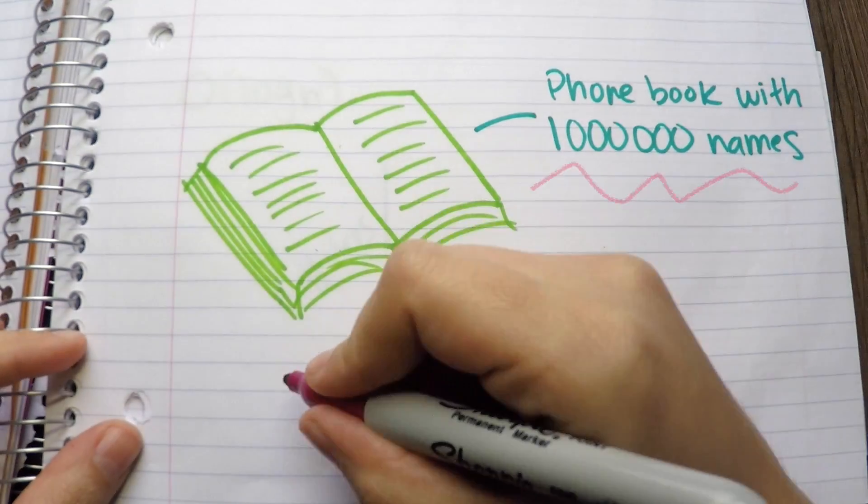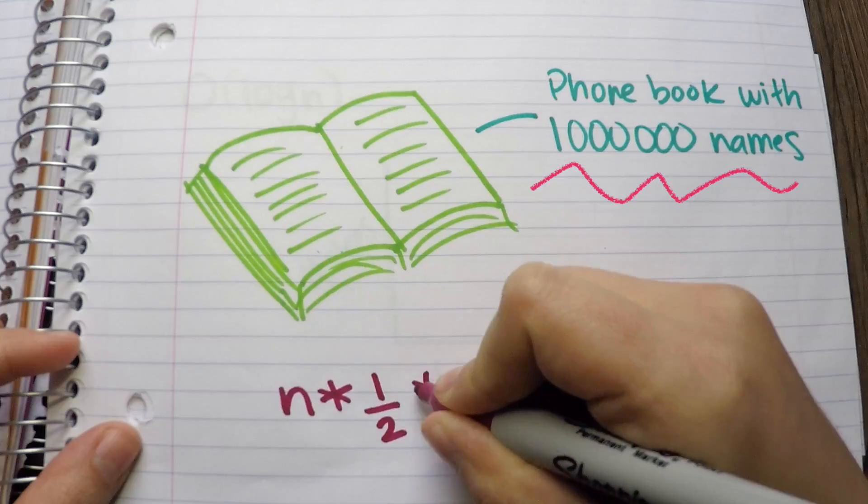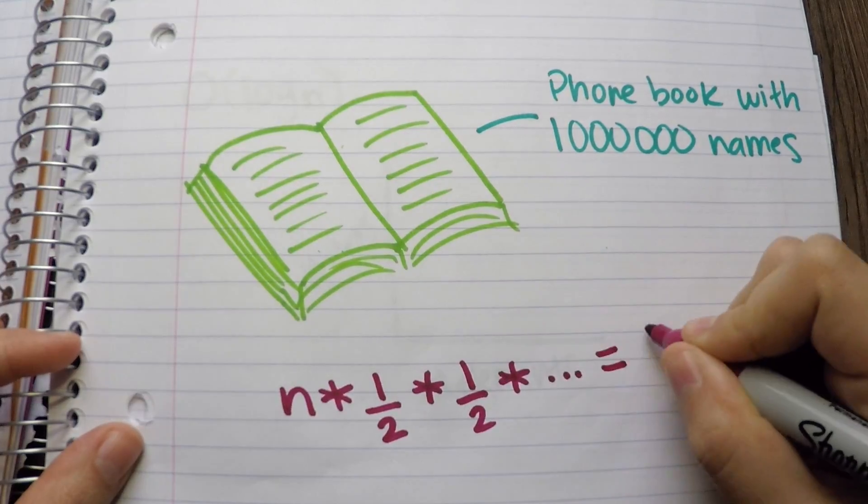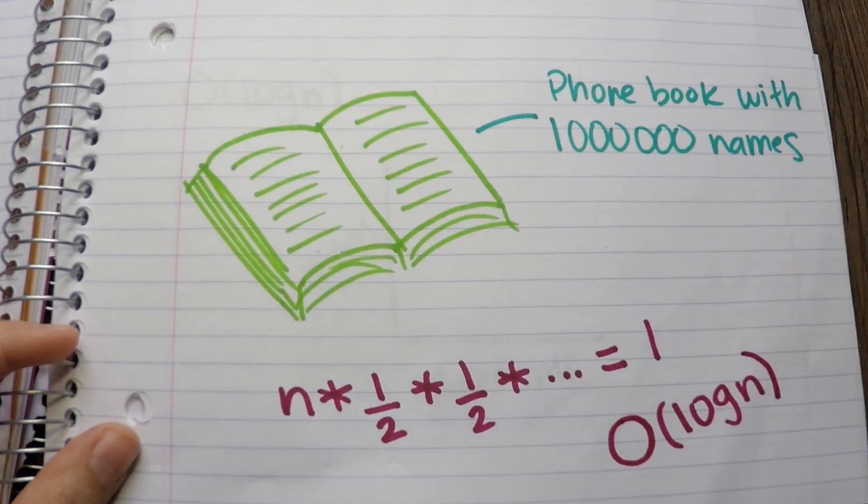So if there are one million names in the book, and you take the half and the half and the half until you're left with the one that you're looking for, it will be O(log n).